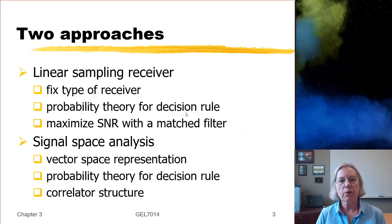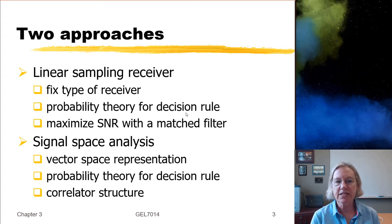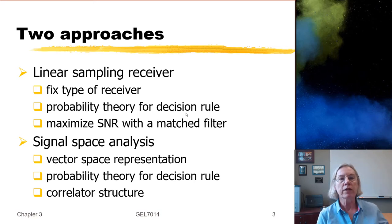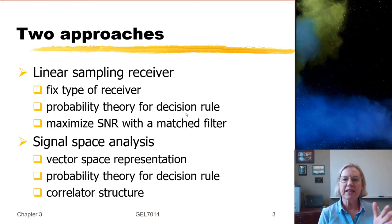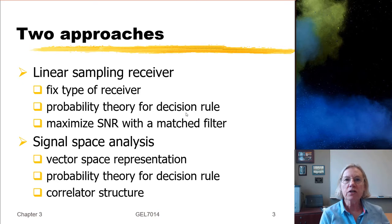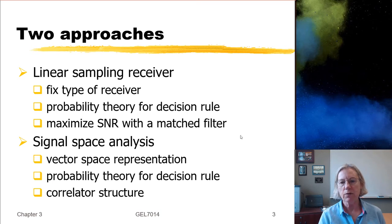So the two approaches — what were they? In the first case, we looked at a linear sampling receiver, and I fixed the type of receiver from the beginning. We looked at probability theory to come up with a good decision rule. So we knew we would get a test statistic, which came after sampling a filtered version, and then we found a rule for that. We also looked at what kind of filter would maximize the signal-to-noise ratio at the output of that receiver, and that we found was the matched filter. So that was week one.